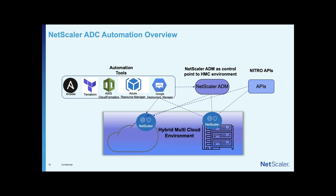Apart from Terraform and Ansible integrations, we also have public cloud templates. Whenever you plan to move to public cloud or deploy a fresh NetScaler VPX, you can use CloudFormation, Azure, or Google templates to provision NetScaler in standalone or high availability deployment. This eliminates manual errors and deploys NetScaler in the recommended fashion, bringing repeatability. We also have REST-based APIs — all automation tool integrations, even ADM, leverage these REST APIs to configure NetScaler.